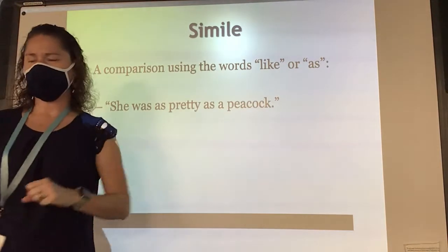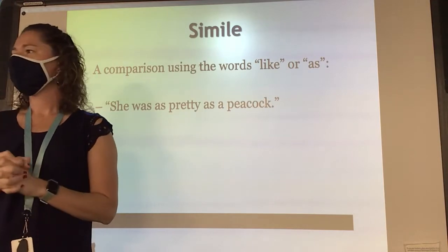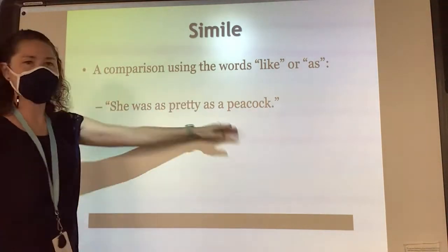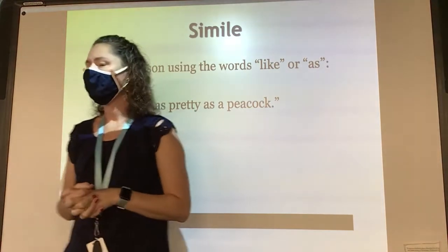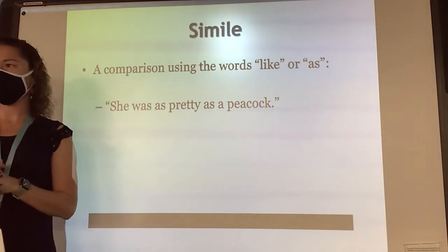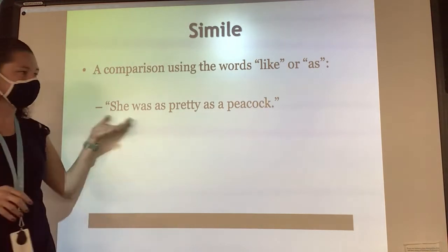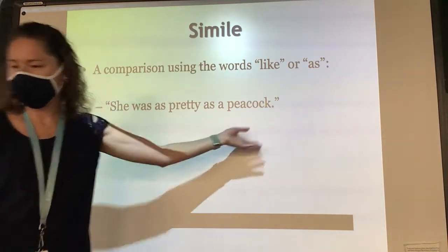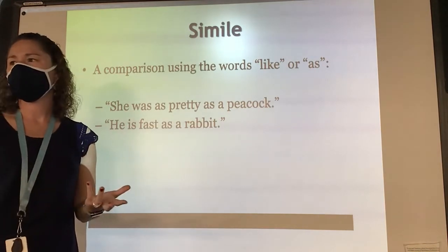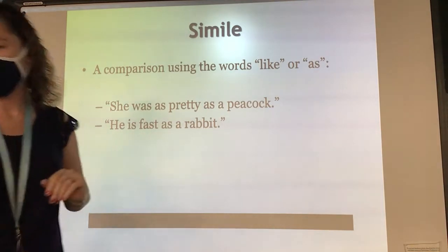She was as pretty as a peacock. You know what a peacock looks like — a pretty fancy looking bird with all the colorful feathers. What does it mean to be as pretty as a peacock? It means she's colorful, she's very pretty — they're accentuating the fact that she's beautiful, just like this particular animal. He is as fast as a rabbit. Is he slow? No, he's fast. Rabbits are pretty quick, so we're comparing his speed to a rabbit.